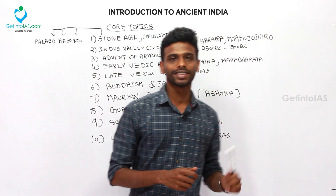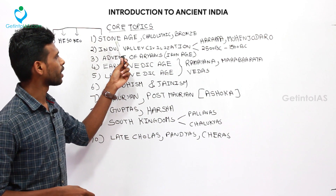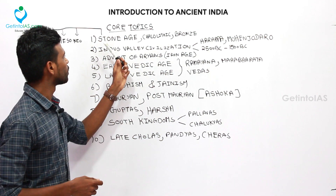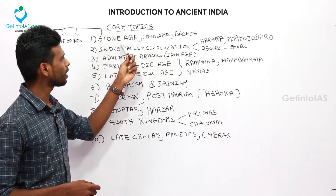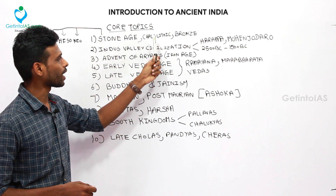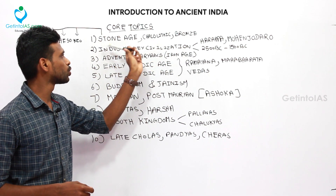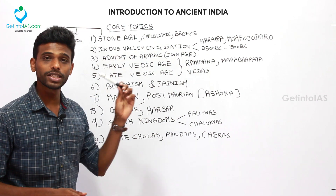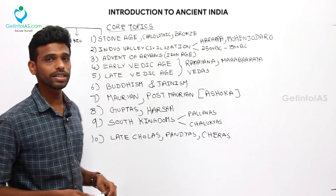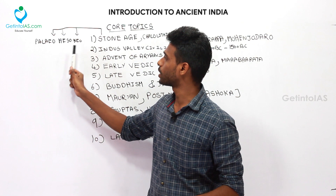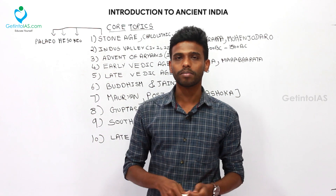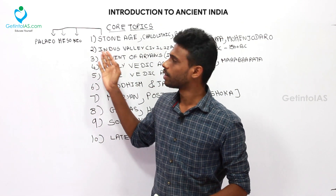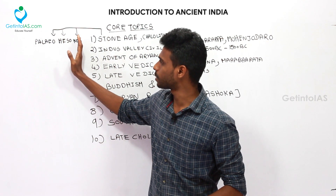Let's move on to the core topics. So the first topic: initially after the advent of humans in India, the period begins with Stone Age, then it moves to Chalcolithic, and then to Bronze Age. Stone Age is the period where people use stone. Stone Age is divided into three subtopics — Paleolithic, Mesolithic, and Neolithic. Lithic means stone, so that period was termed as Stone Age. You should compare all these things.